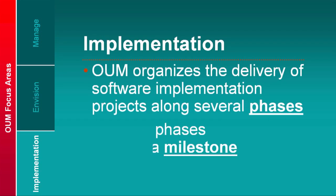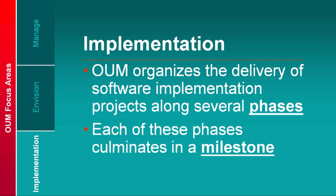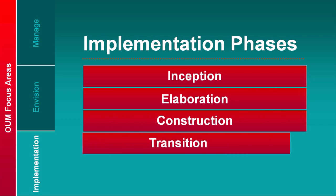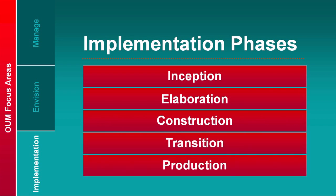Oracle Unified Method organizes the delivery of software implementation projects along several phases. Each of these phases culminates in a milestone. The milestones serve to establish exit criteria for each phase and evaluate the project's progress and the readiness of the project to commit resources to begin the subsequent phase. These phases are: number one, inception; number two, elaboration; number three, construction; number four, transition; and number five, production.